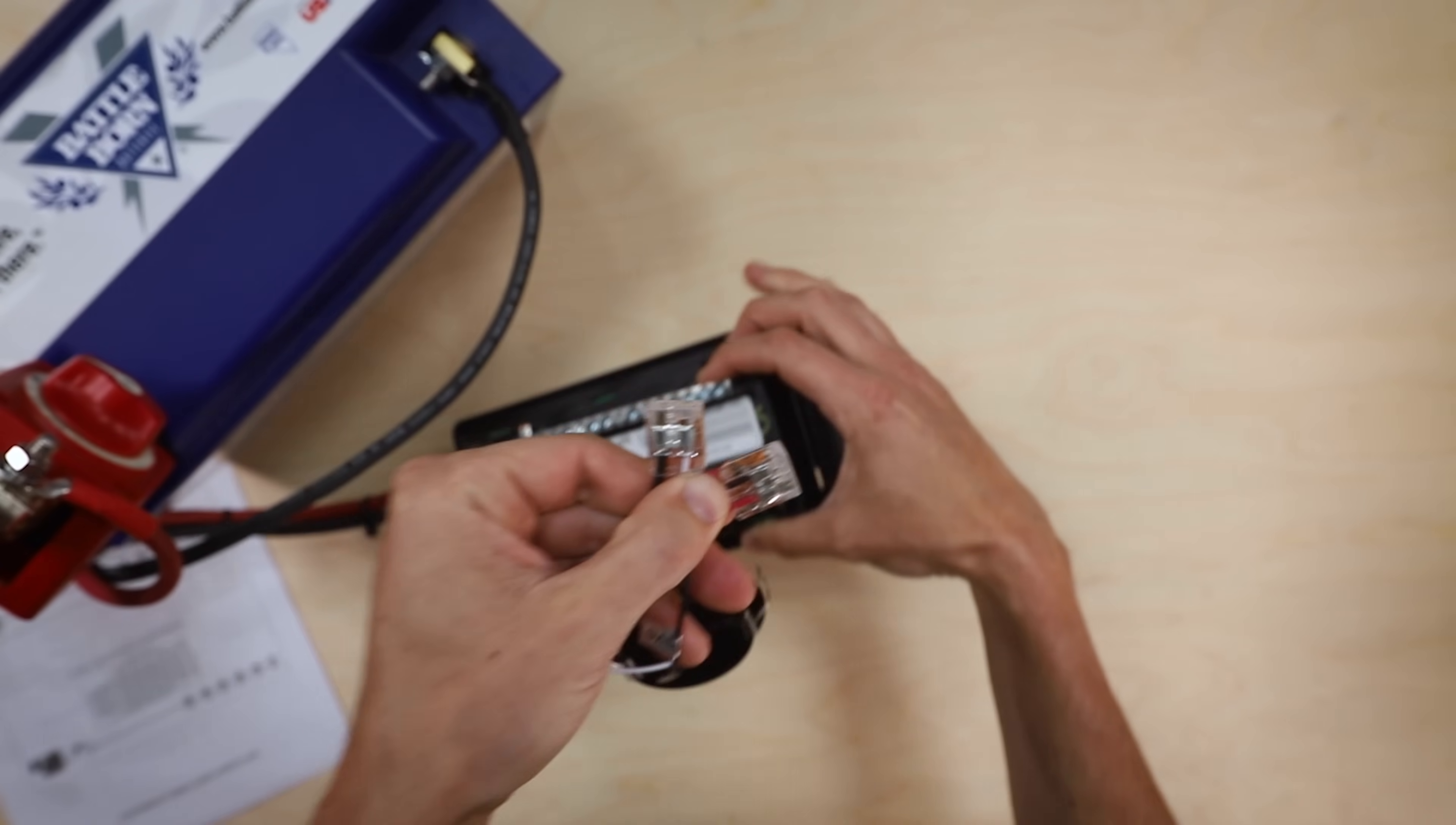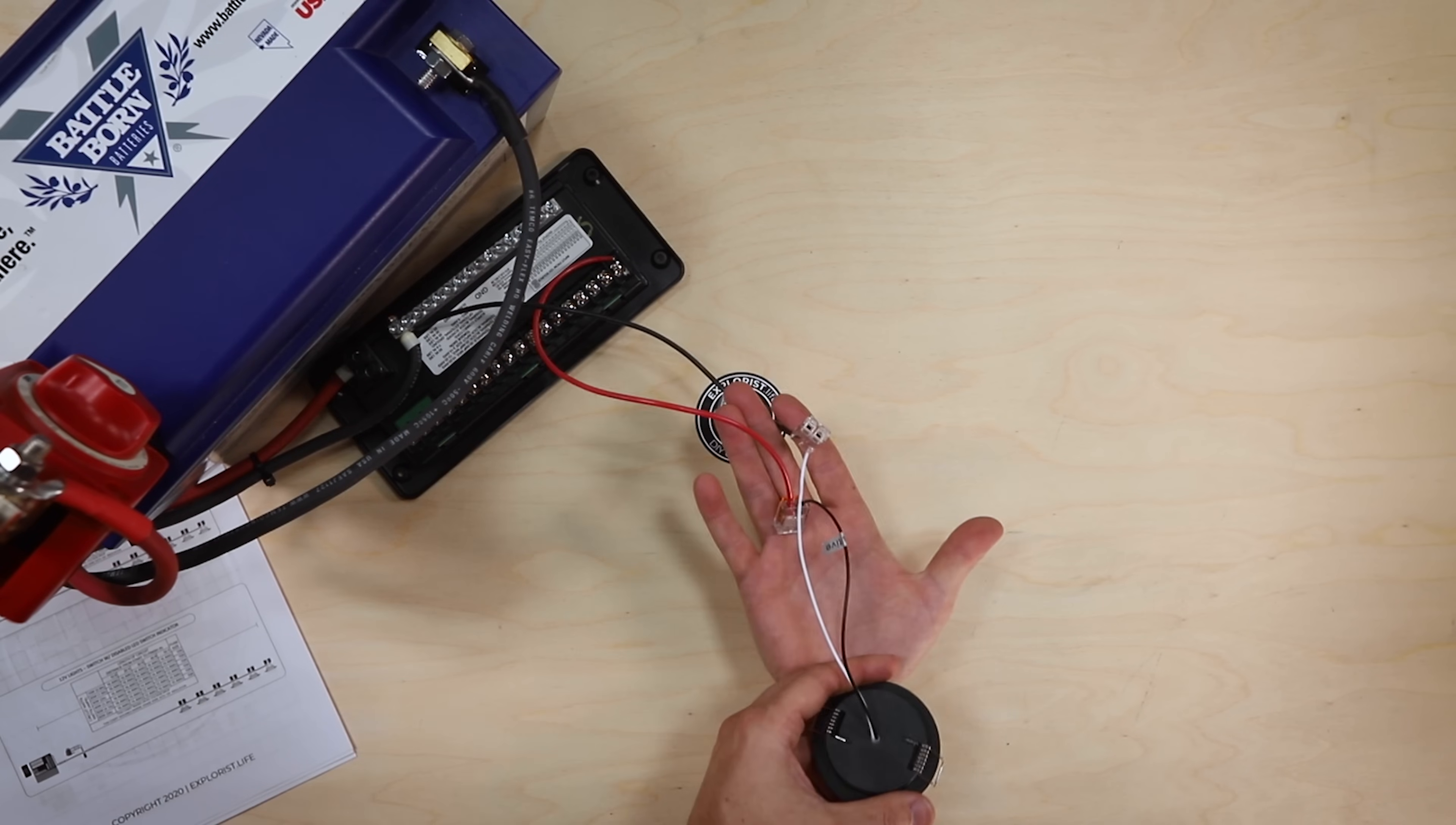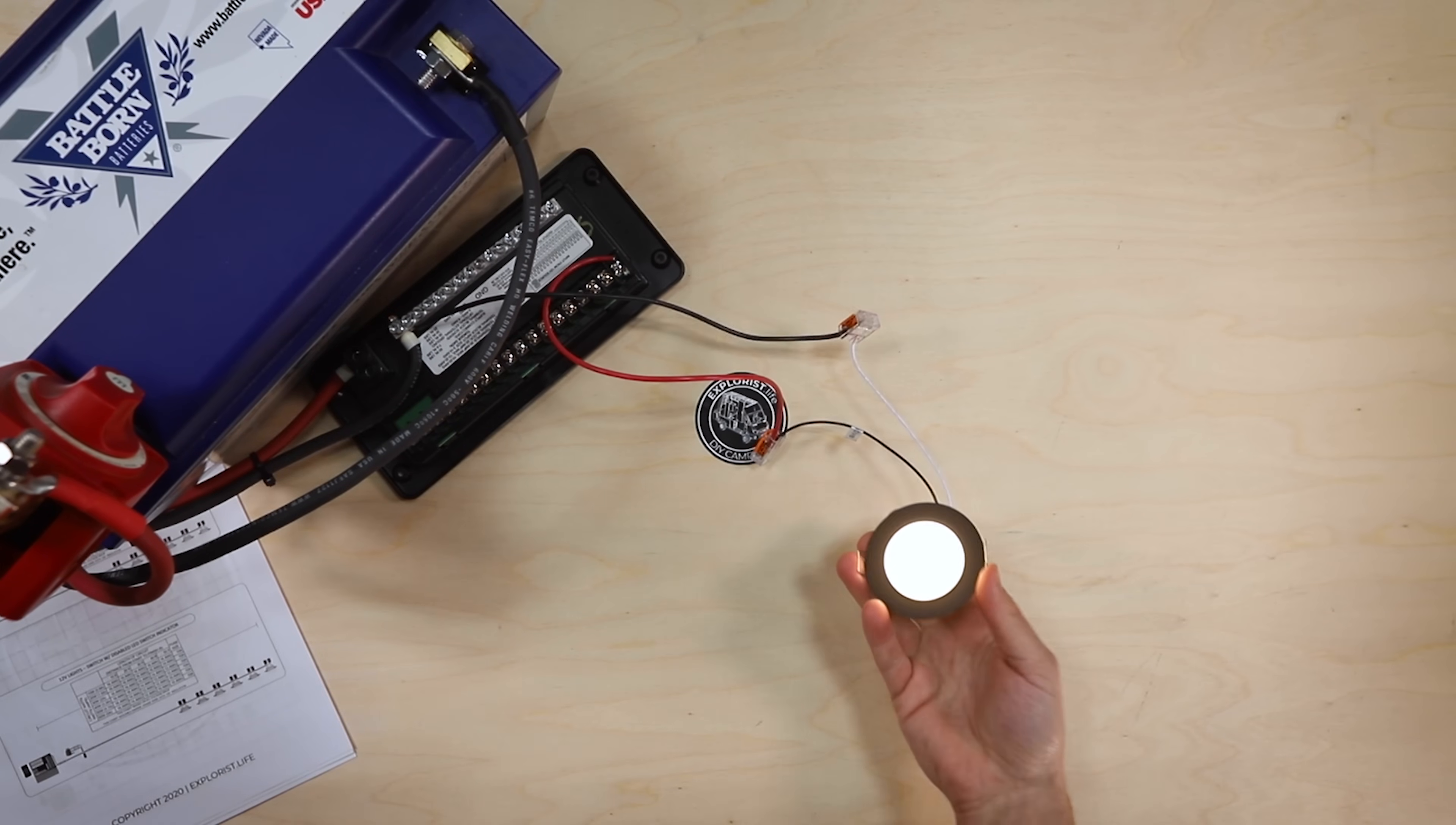A great thing about these lever nuts is this is a perfect solution for wiring different sizes of wire together in the same connector. Now this is essentially hooked up and I can go ahead and turn this switch on, and our light came on.